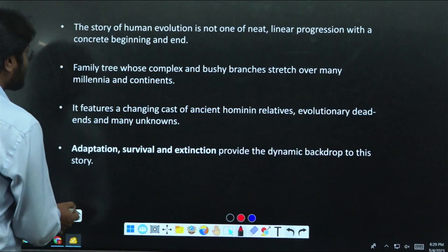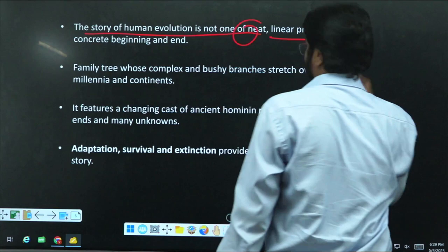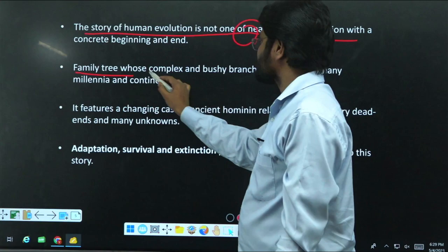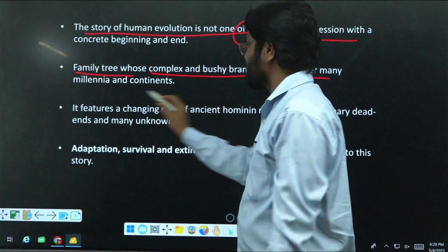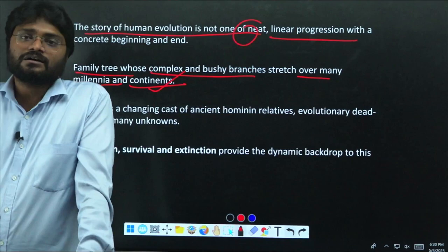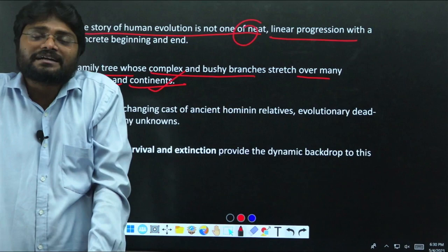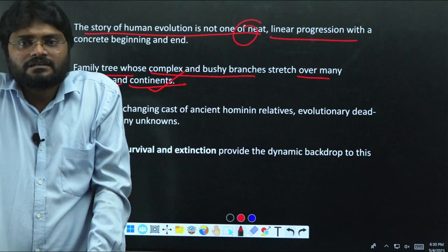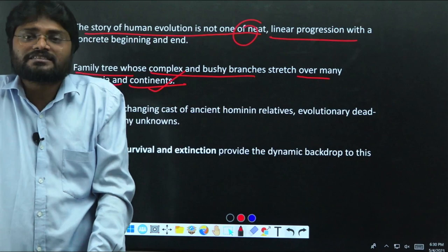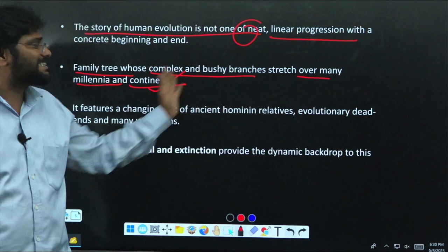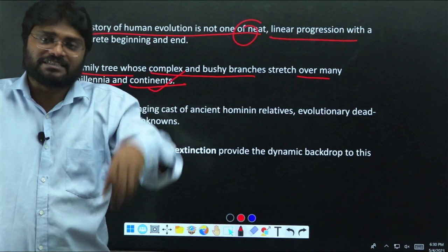This is all for today. Some concluding remarks: the story of human evolution is not a neat and linear progress. Human evolution is a family tree with complex branches that extended across different millennia and on different continents. Homo erectus evolved in Africa, but Neanderthals evolved in a completely distinct place — in Europe. Denisovans evolved in a completely distinct area: Southeast Asia as well as Siberia. Our tree extended across different continents; it did not happen in the same place, though initially humans might have originated in Africa.